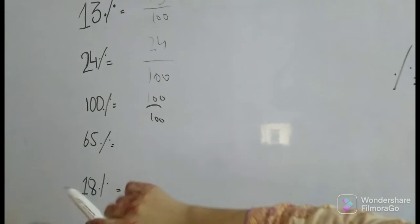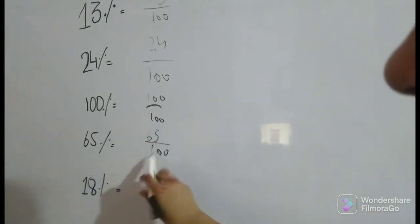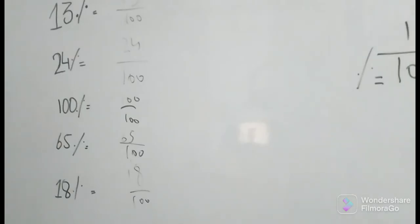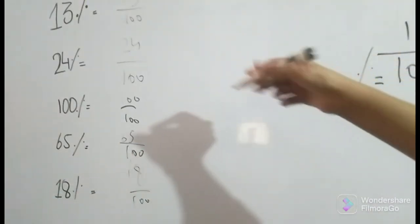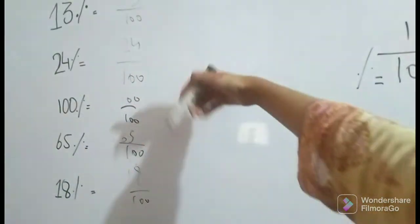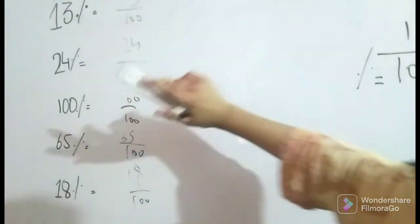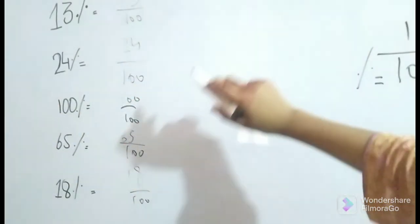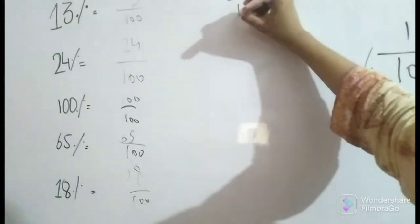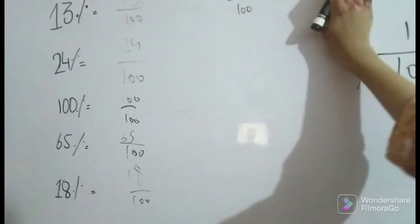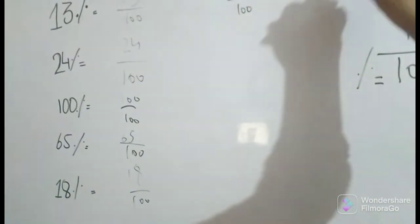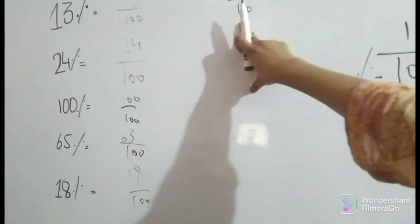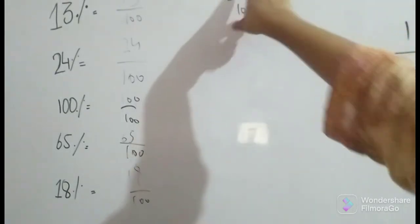Now, if we want to change this into percentage, we can convert it. The numerator will stay the same. Like 12 over 100, if we have to change into percentage, it would be 12%. How? Because 100 is equal to the percent sign, and 12 will stay the same.